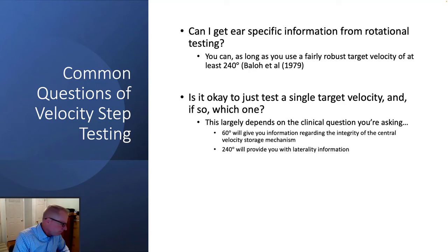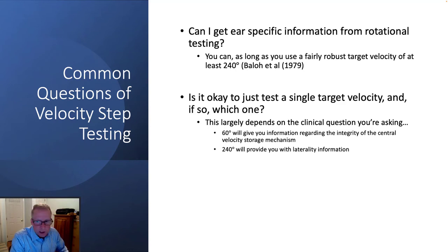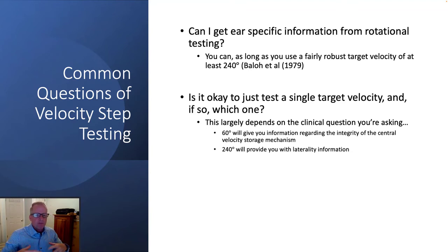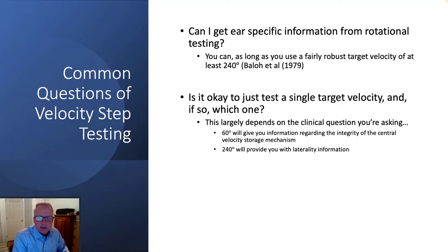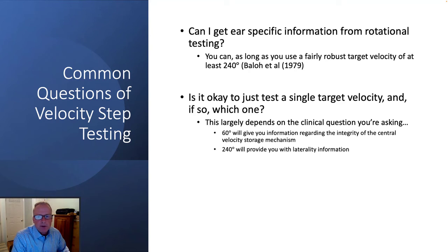Clinicians ask me: if I'm only going to do one target velocity, which one should I do? It largely depends on your clinical question. Do you want laterality information, perhaps to avoid giving this patient caloric? Then I would do the 240. If you want information regarding central function — maybe to corroborate some SHA data for phase — I would do the 60-degree velocity step test. That answer depends on what clinical question you're asking.